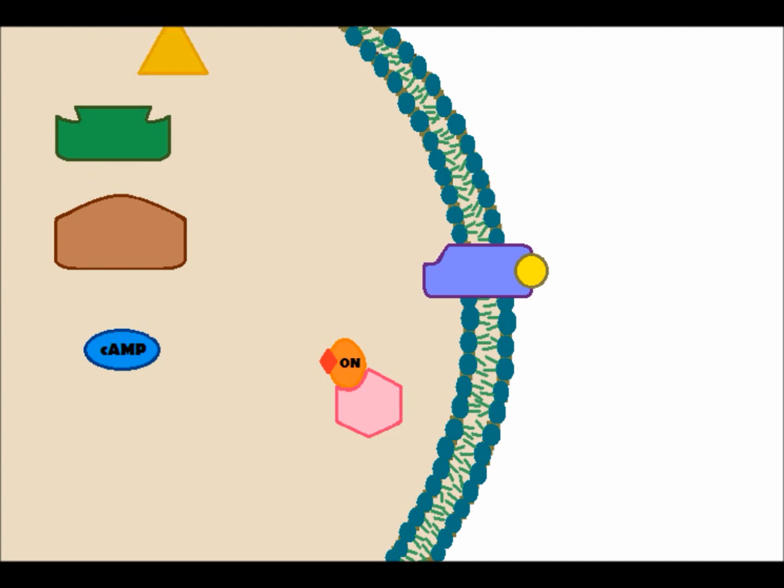Eventually, these activated enzymes produce an action in the cell. In this case, it causes the liver cell to start converting glycogen into glucose.